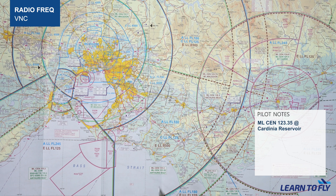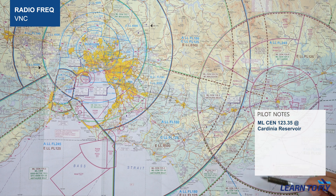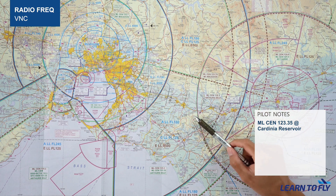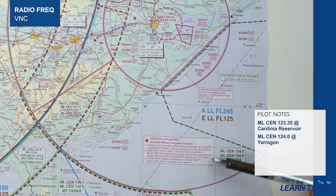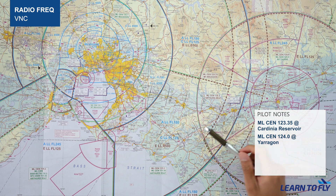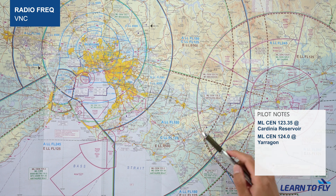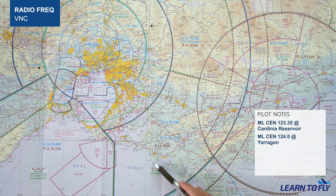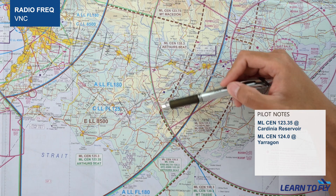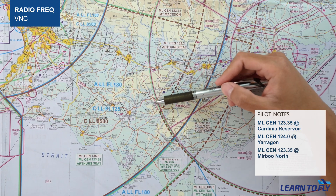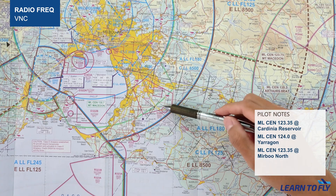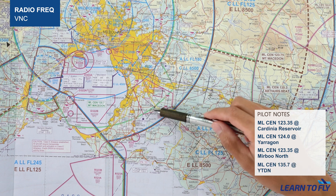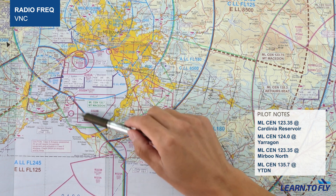When we reach the second green line, we need to switch frequency a second time — we will be abeam Yarragon Township and the frequency will be 124.0, which is still Melbourne centre. From Latrobe Valley to Liangatha, switch frequency to 123.35 when crossing the green line — this happens when we pass the township of Morwell North. From Liangatha back to Karem, when passing Tyabb Township, switch frequency back to 135.7.